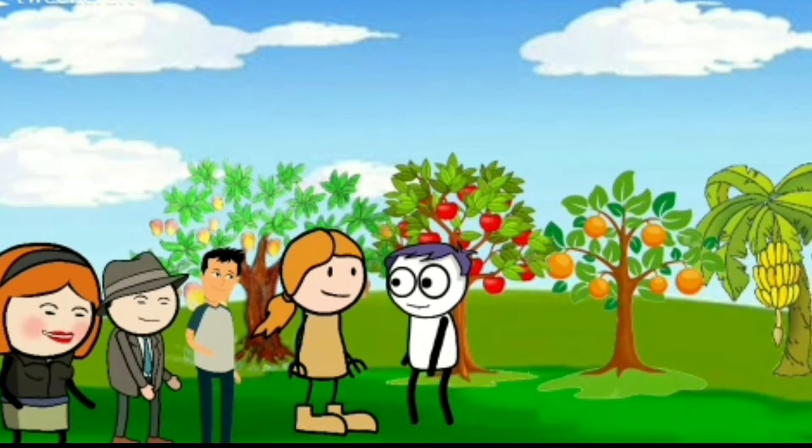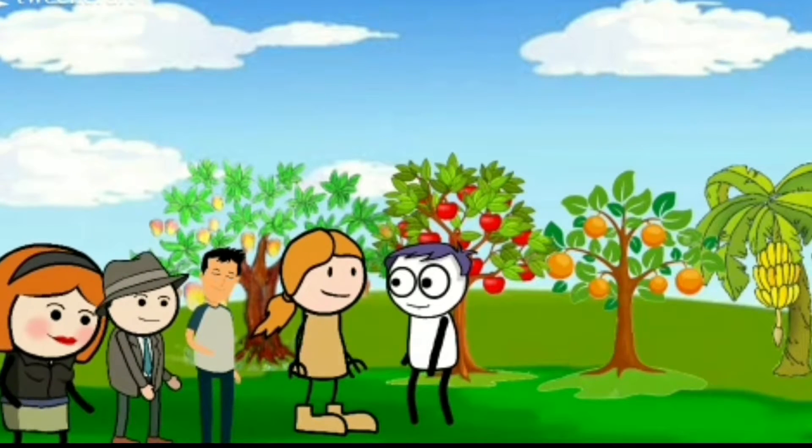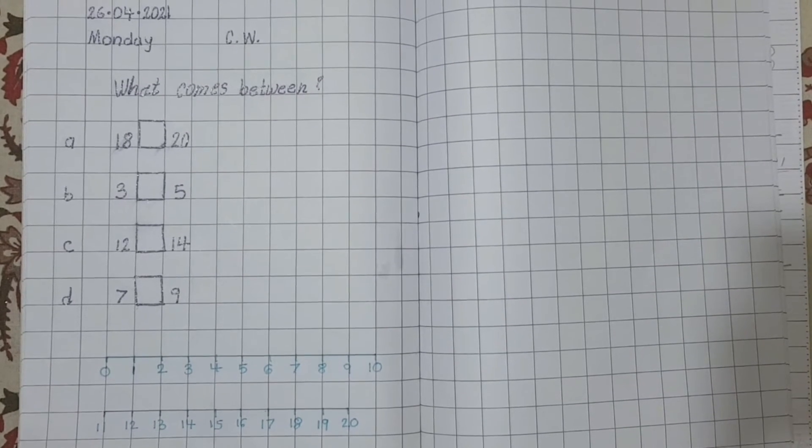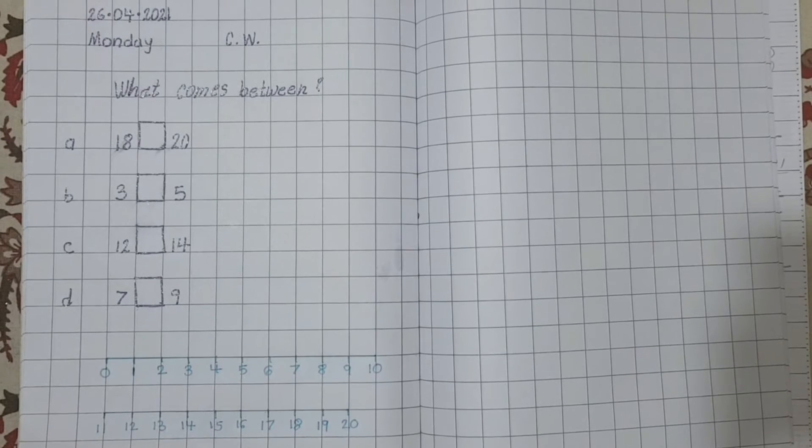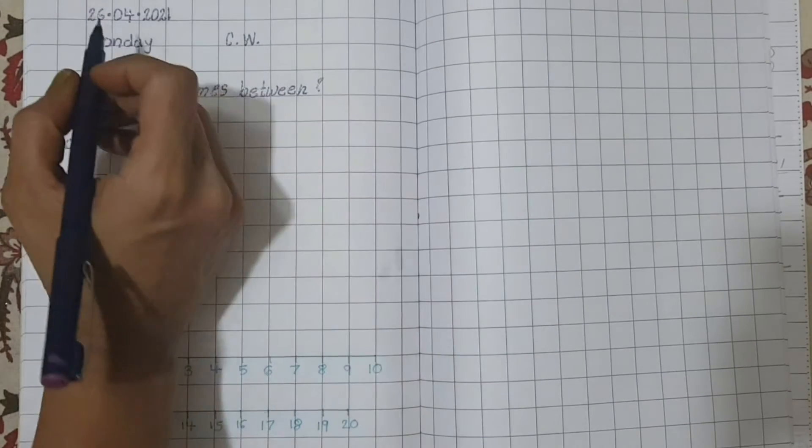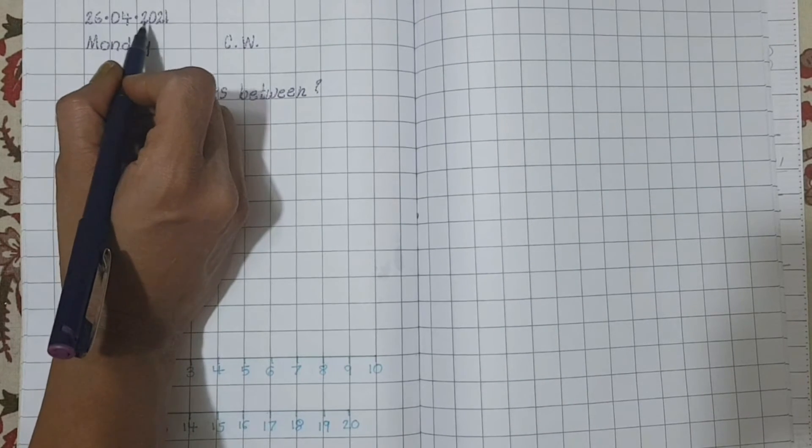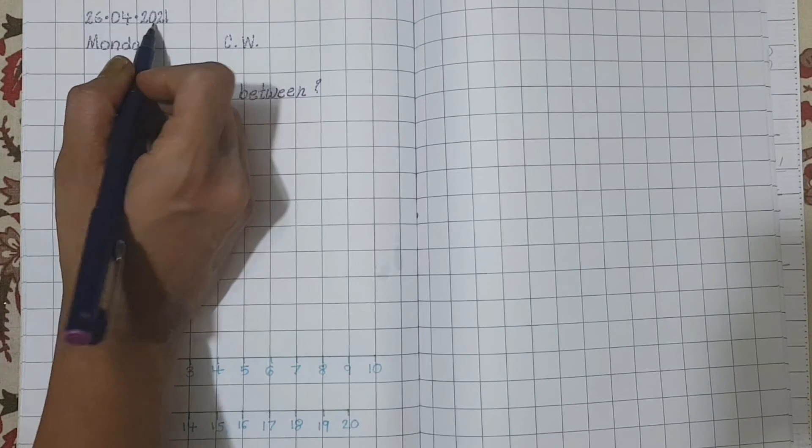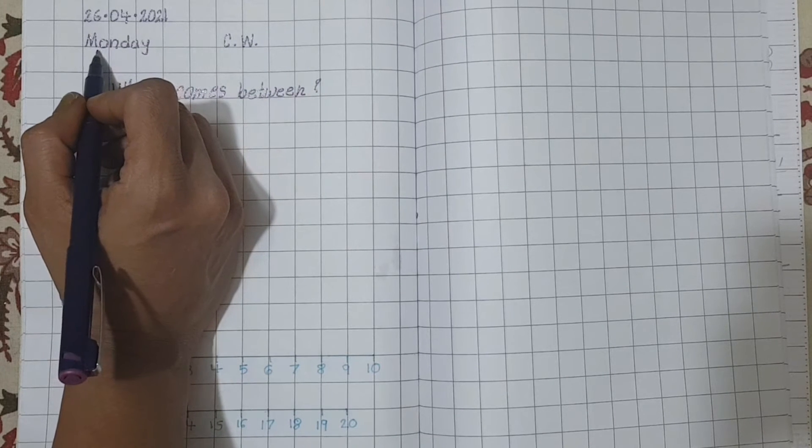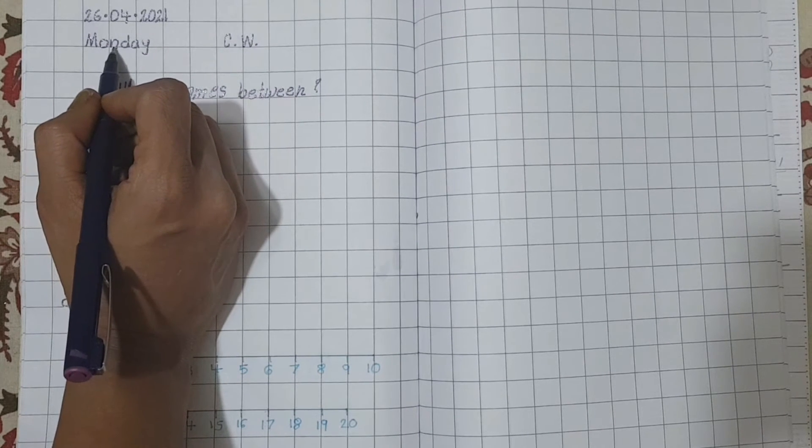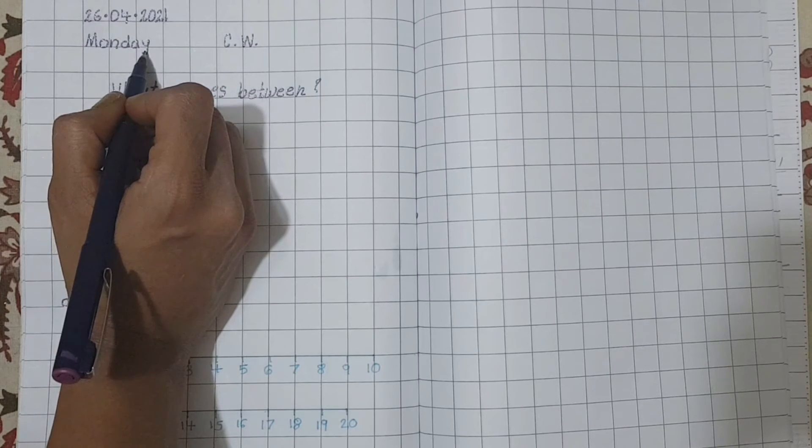Now, you have understood this concept very well. So, let's go in the class and do our class work. Ok children, let's start our today's work. First of all, write down today's date. 26.04.2021. And today is Monday. M-O-N-T-E-Y Monday.